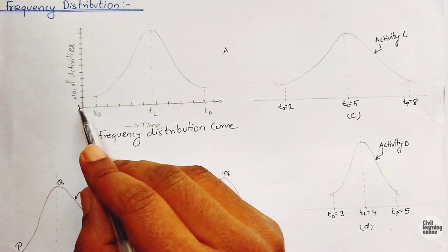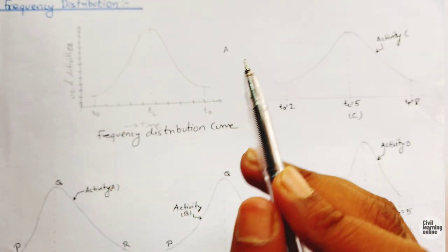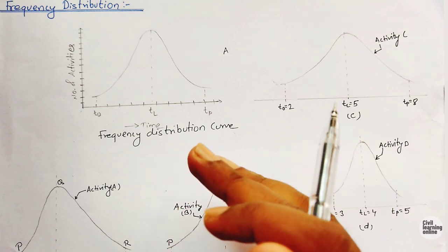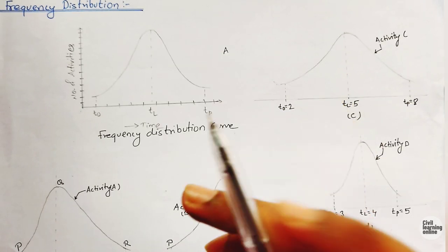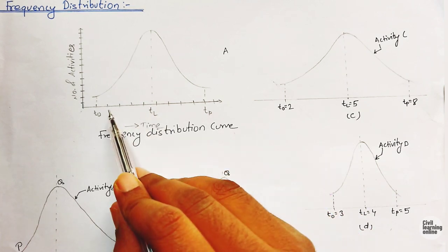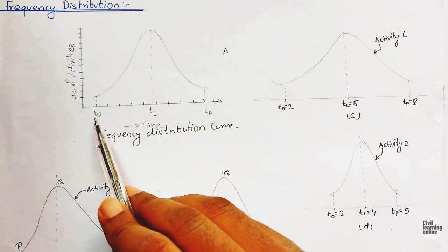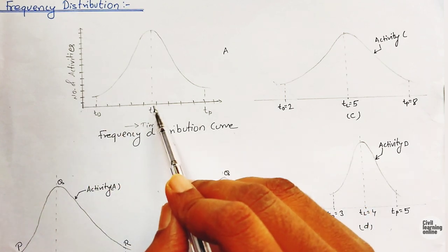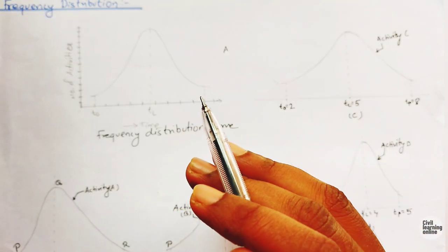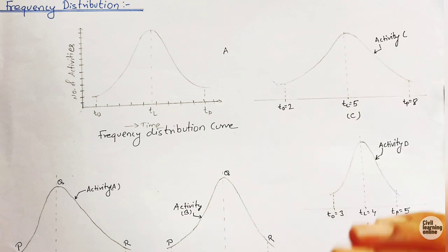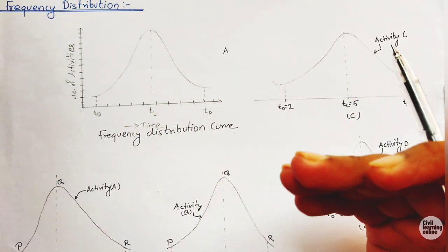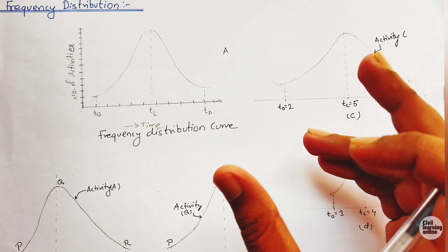If the least time is required, we have completed few activities during that period. Similarly, if larger time is required, that is our pessimistic time. Drawing the frequency distribution curve between number of activities completed and time required, we find that the maximum number of activities will be completed at the most likely time. The most likely time lies between the optimistic and pessimistic time. These time estimates are calculated by the estimator based on past experience. Such a curve is called a unimodal curve because it has a single hump.